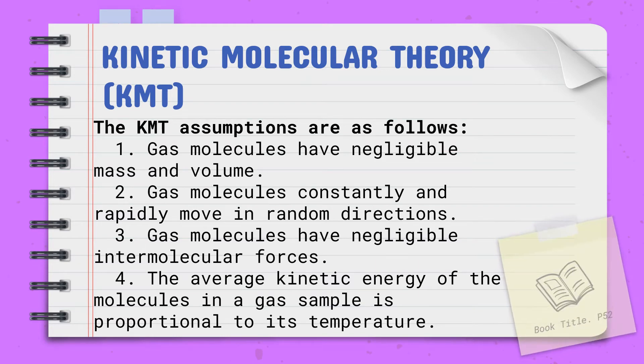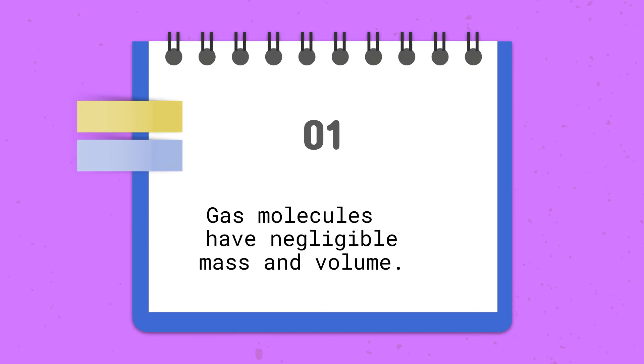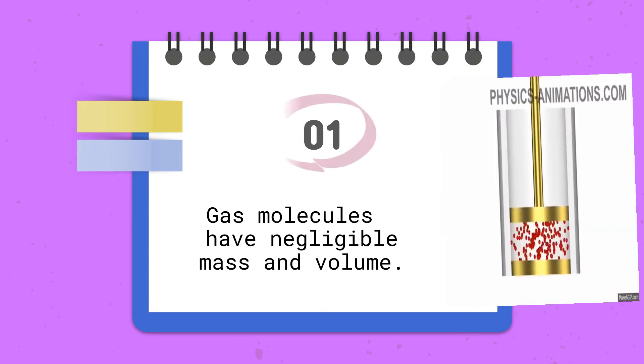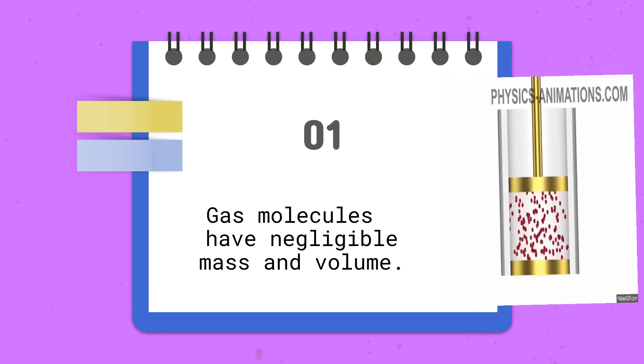Now let's discuss each KMT assumption on gas particles. First, gas molecules have negligible mass and volume. Gas is a very small particle and has the least mass if we compare it to solid and liquid. Because of this, sometimes gas mass and volume are not observed or difficult to measure.